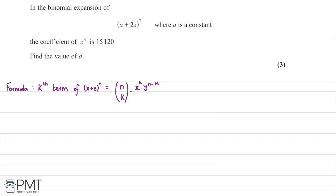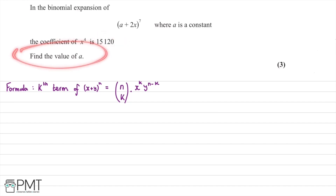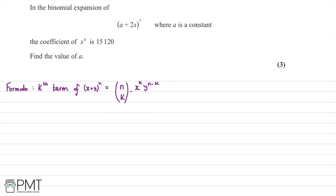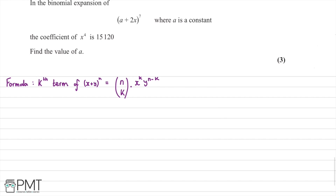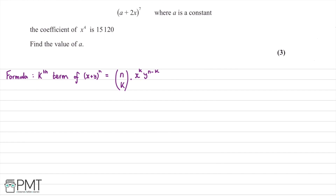In this question, we're told that in the binomial expansion of (a + 2x)⁷, the coefficient of x⁴ is 15,120, and we need to find the value of a. Using the general term formula for (x + y)ⁿ: nCk · xᵏ · yⁿ⁻ᵏ. For the x⁴ term, we have 7C4 · (2x)⁴ · a³.